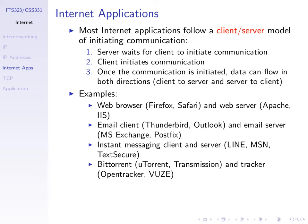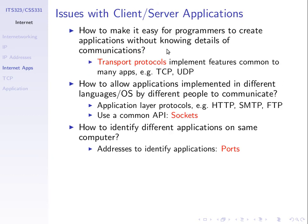That will have some impact on how addressing is used and how we identify different applications. There are a number of issues in how to support client-server applications on the internet. Many applications need reliability — that is, if I download a one-megabyte file from a server, I want to make sure that the one megabyte my client gets is identical to what the server had. If the server sends me one megabyte but I only get 900 kilobytes, that's not reliable communications.